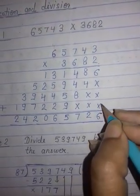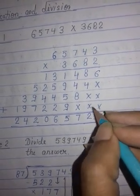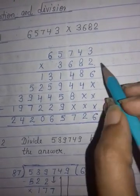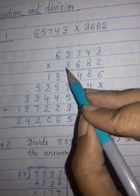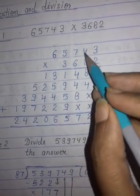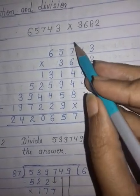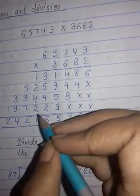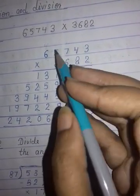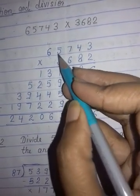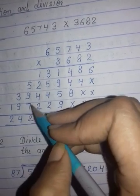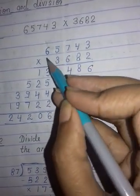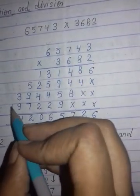Now come to the next row. We will leave three places: ones, tens and hundreds. Then start multiplication with 3. 3 times 3 is 9. 3 times 4 is 12, carry 1. 3 times 7 is 21, 21 plus 1 equals 22. Write down 2 here, 2 is carry. 3 times 5 is 15, 15 plus 2 equals 17. Write down 7 here, carry is 1. 3 times 6 is 18, 18 plus 1 equals 19.